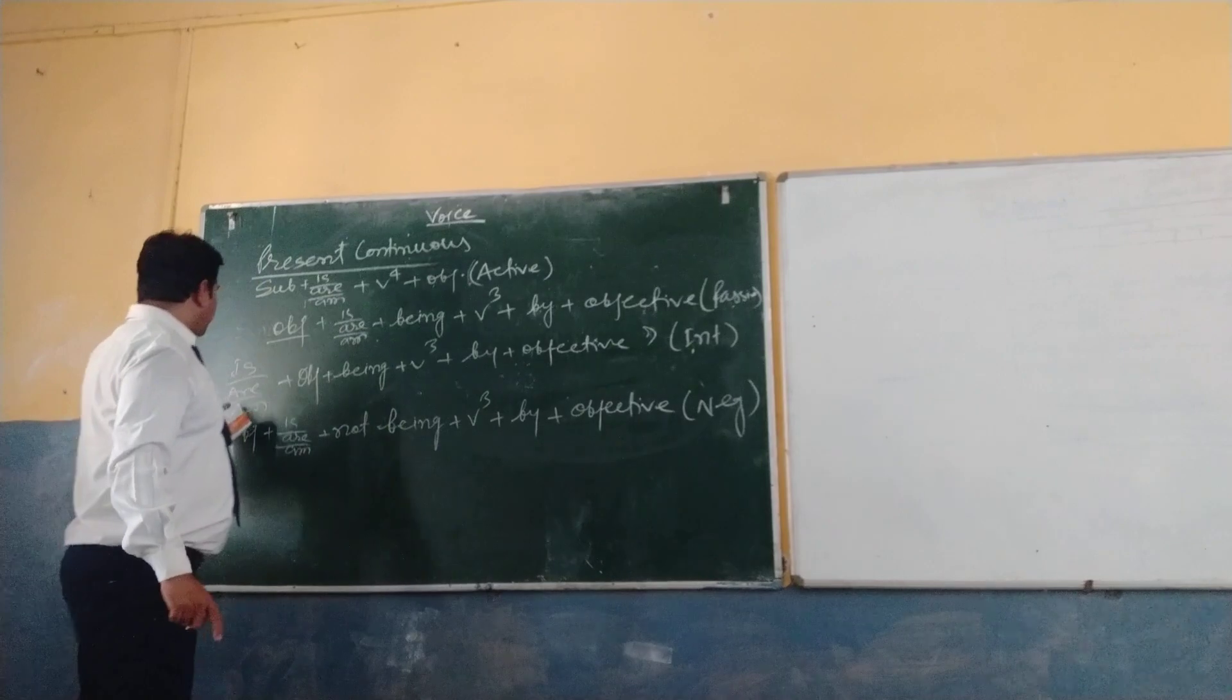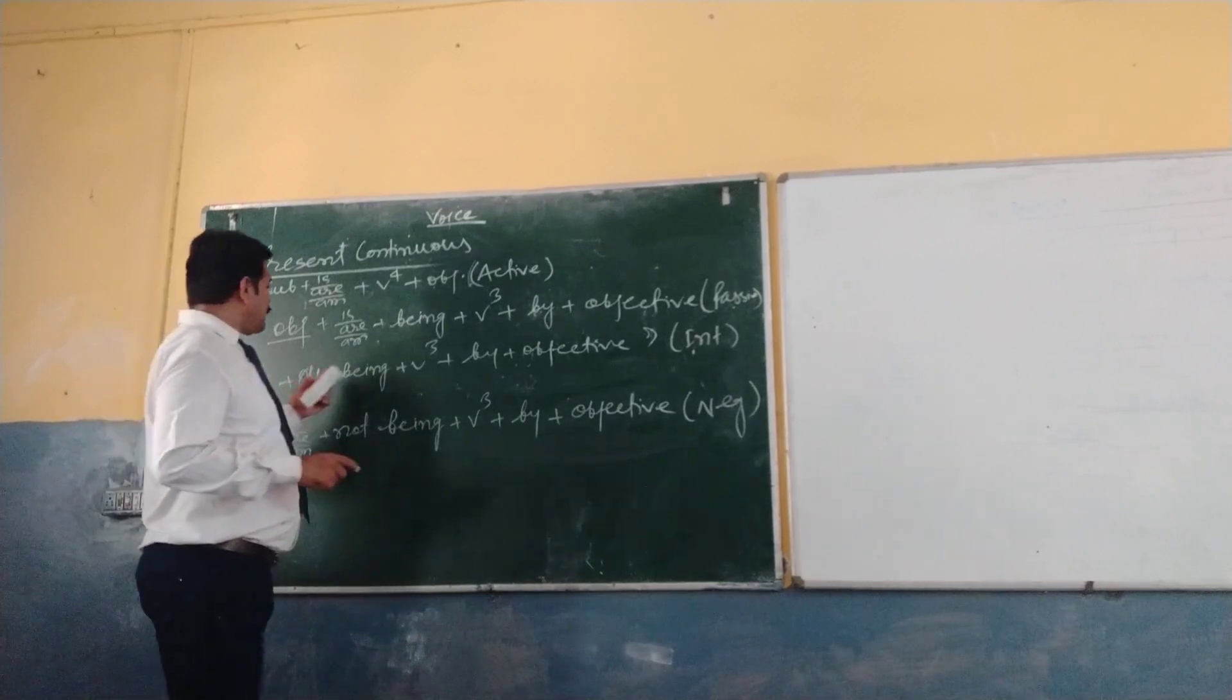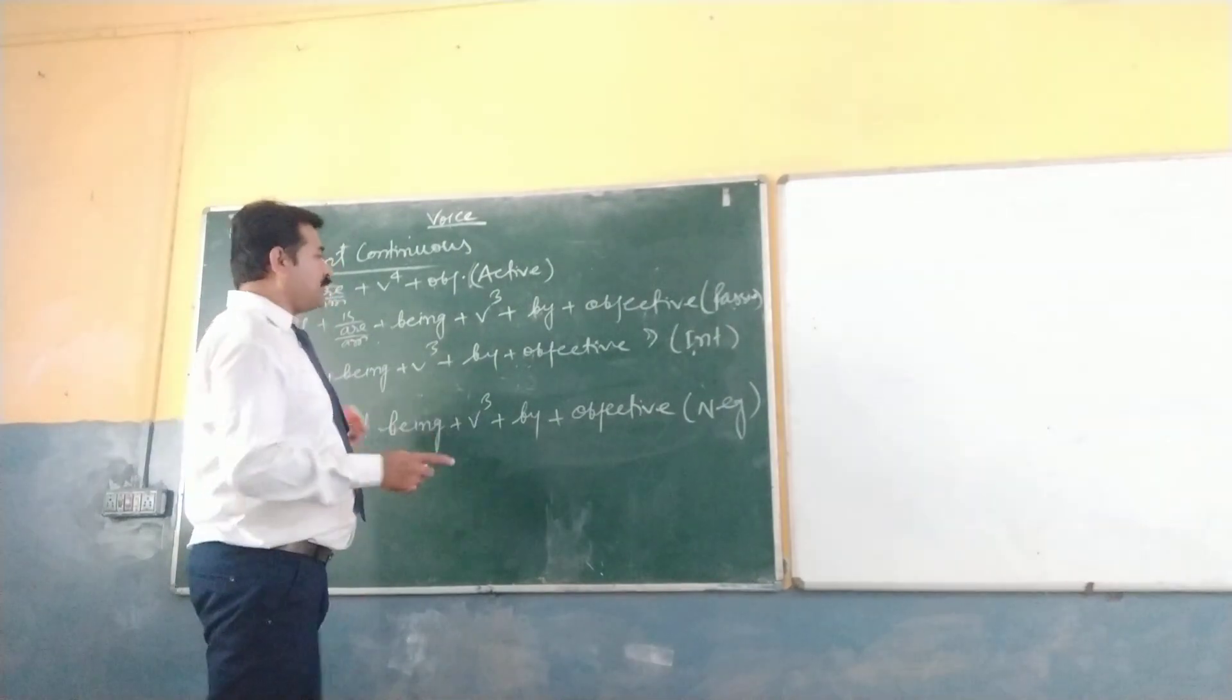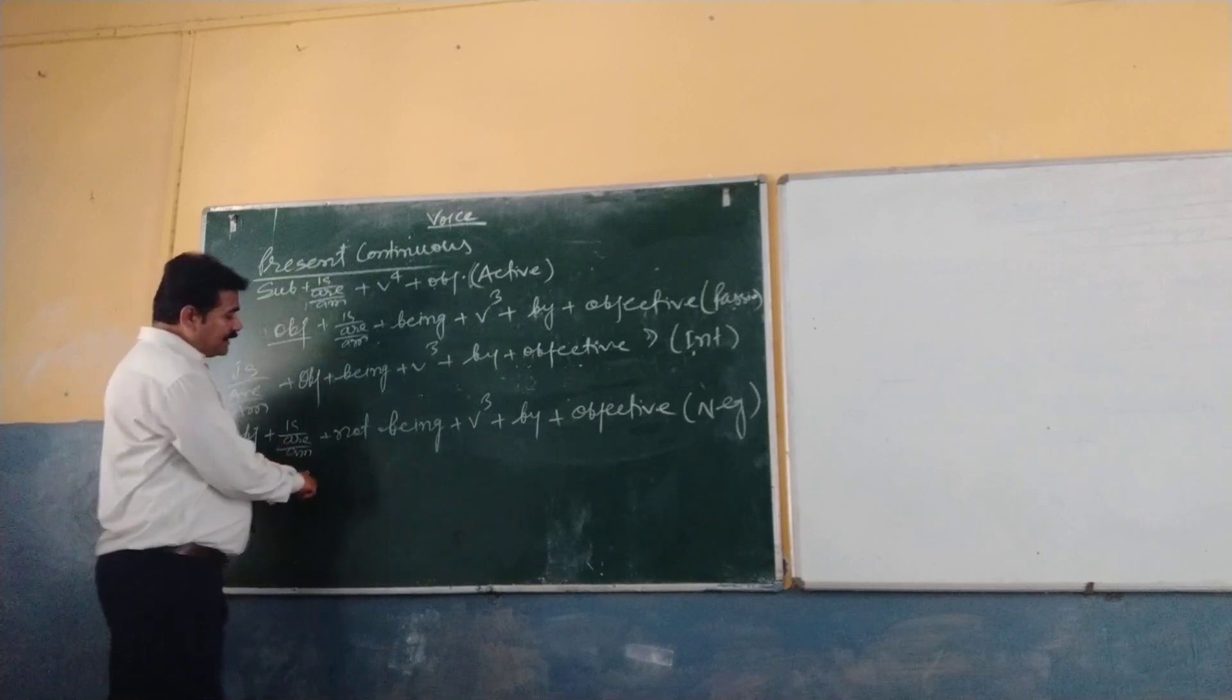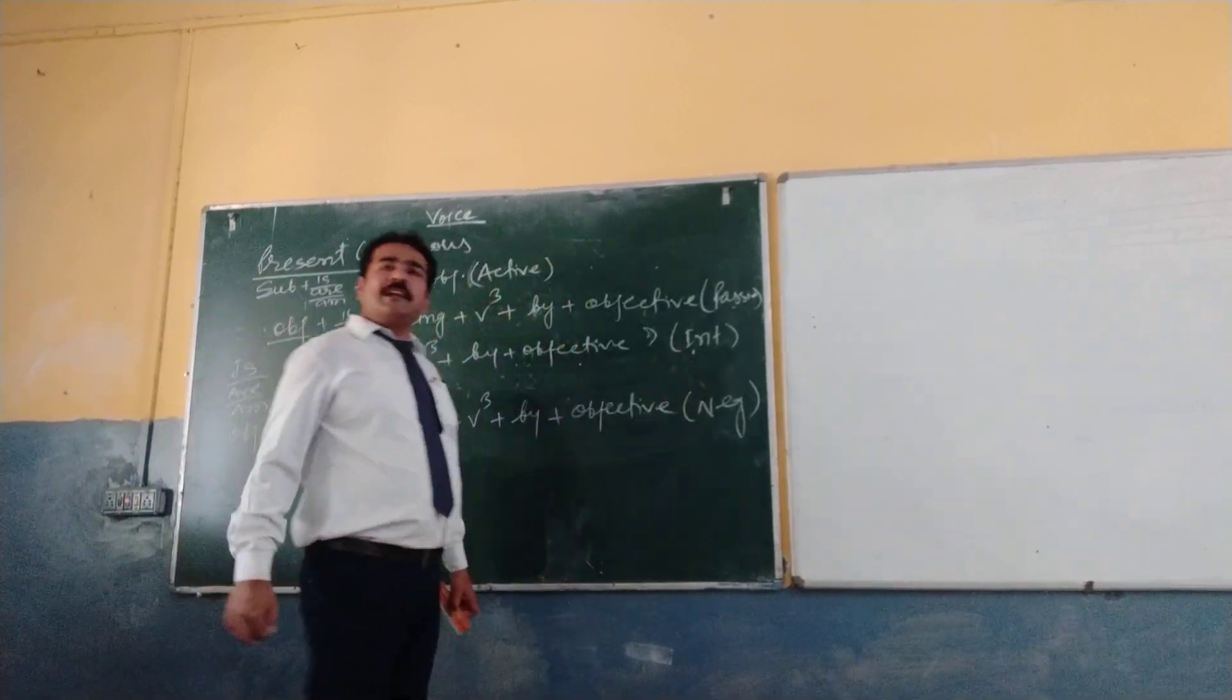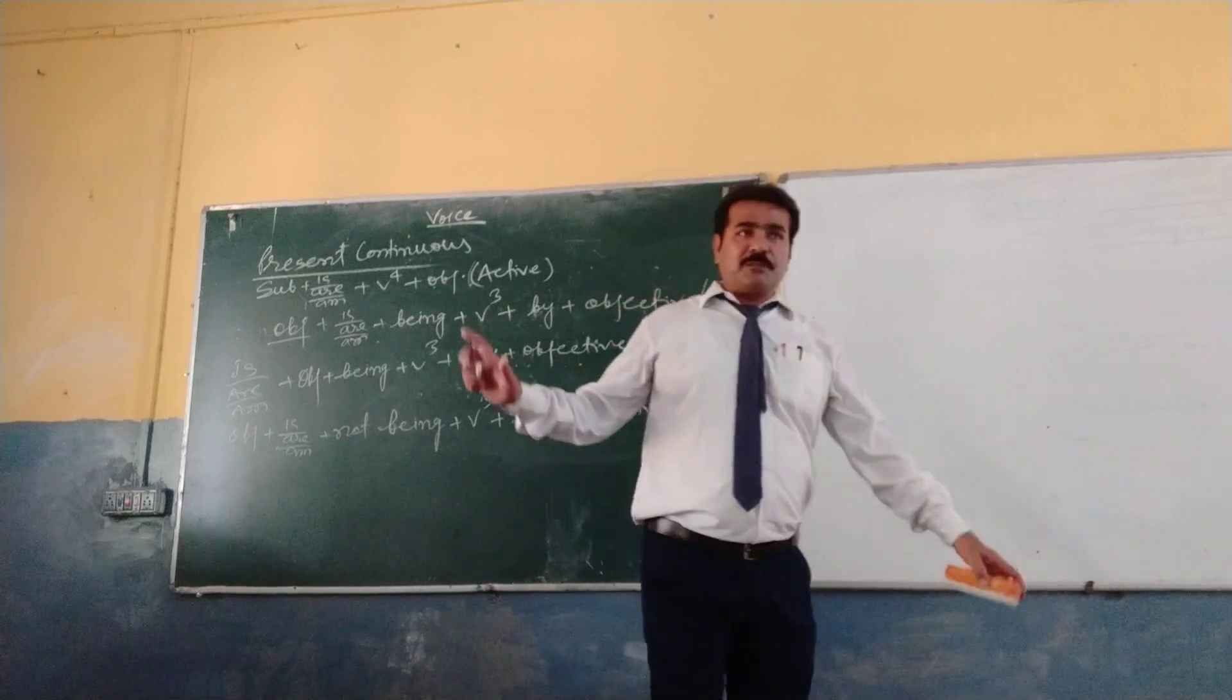Then V3 plus by plus objective for passive. For the interrogative sentence, E is RM means the helping word will come at first place. Then object plus being plus V3 plus by plus objective. As I told you, subjective will change into objective. So that will be used here at the end.